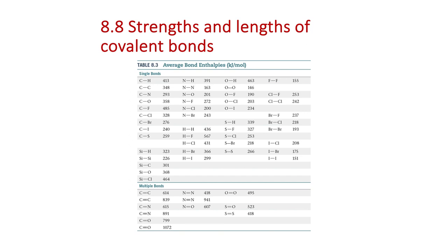This slide is just a reminder of bond length and strength trends: double bonds are stronger than single bonds, and double bonds are also shorter. So as you shorten a bond, you strengthen it. A triple bond is even shorter and even stronger. Single bonds are longer and weaker, double bonds shorter and stronger, triple bonds even shorter and even stronger.